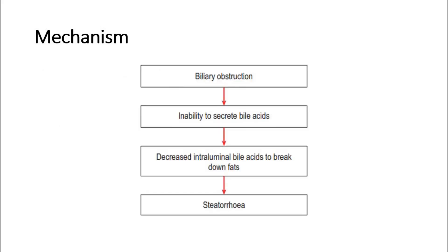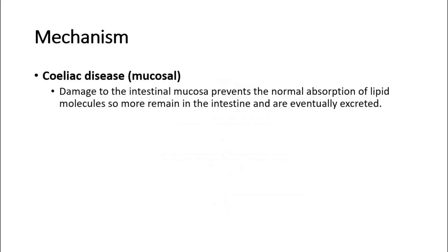This flowchart shows how biliary obstruction leads to steatorrhea. Celiac disease is a mucosal problem, where there is a problem in absorption of fat. Damage to the intestinal mucosa prevents the normal absorption of lipid molecules, so more remain in the intestine and are eventually excreted.